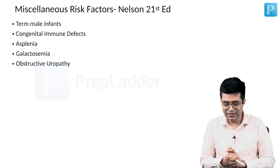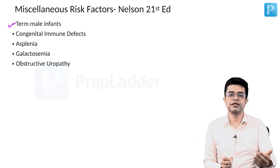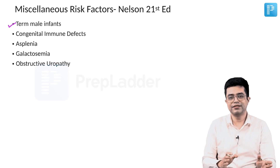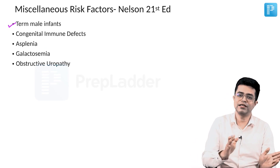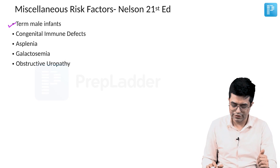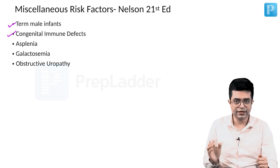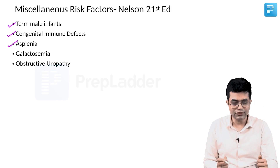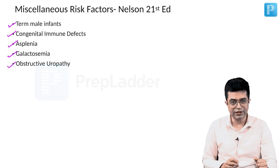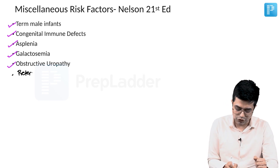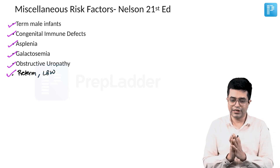Other additional miscellaneous risk factors: studies have shown that term male infants have a higher risk of sepsis than female infants — this has not been shown in preterm and low birth weight newborns. Congenital immune defects, asplenia, galactosemia, and obstructive uropathy all increase the risk of sepsis. Preterm and low birth weight newborns are universal risk factors for neonatal sepsis.